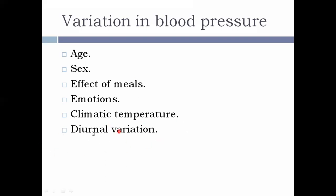The next is diurnal variation. Blood pressure shows a diurnal variation of about 5 to 10 mmHg. Values are lower in the morning and higher in the afternoon. But diurnal variation can be reversed in the case of night workers or night shift workers.